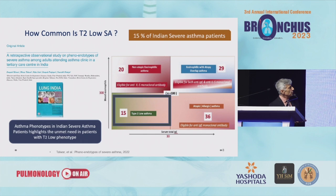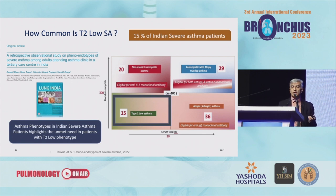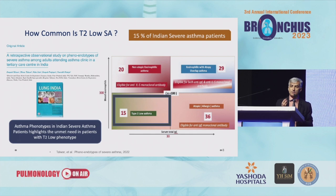When we looked into it, with eosinophil count of 300 as cutoff, T2 low is 15%. One biologic in India has a cutoff of 150, and if you apply that, T2 low reduces to 9%. So if you look at how many severe asthma patients in India are eligible for biologicals as per the drug label, 90% are eligible. Only 10% keep suffering like the case I showed.